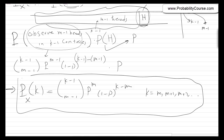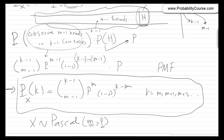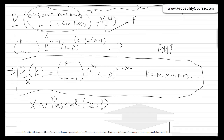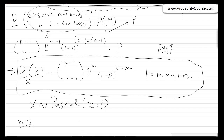That's the PMF for the Pascal (or negative binomial) distribution. We write x ~ Pascal(m, p), where m is the number of heads we wait for, and p is the probability of heads. Note that if m = 1, it is exactly the geometric distribution: Pascal(1, p) is the same as Geometric(p).